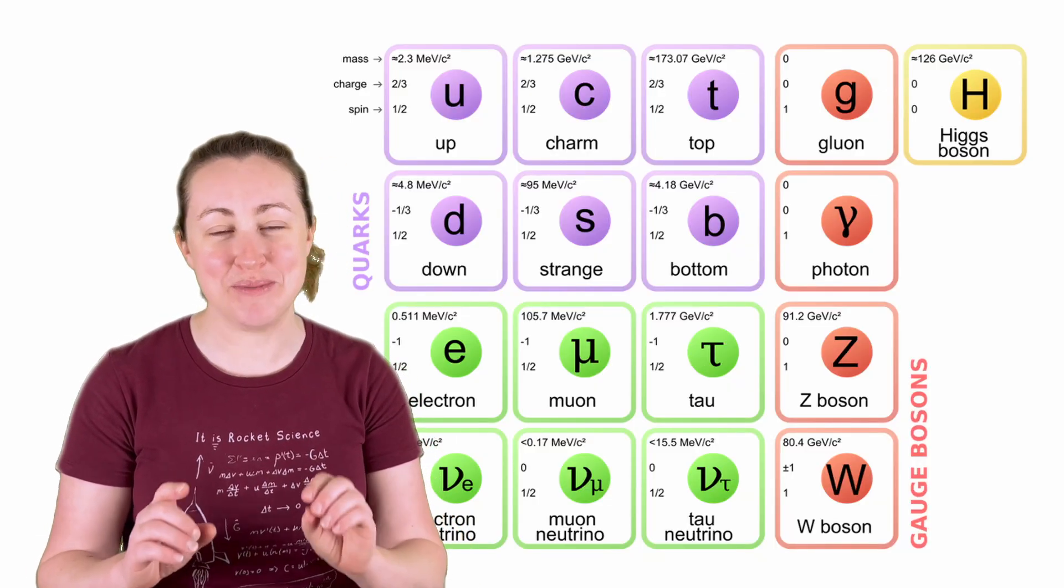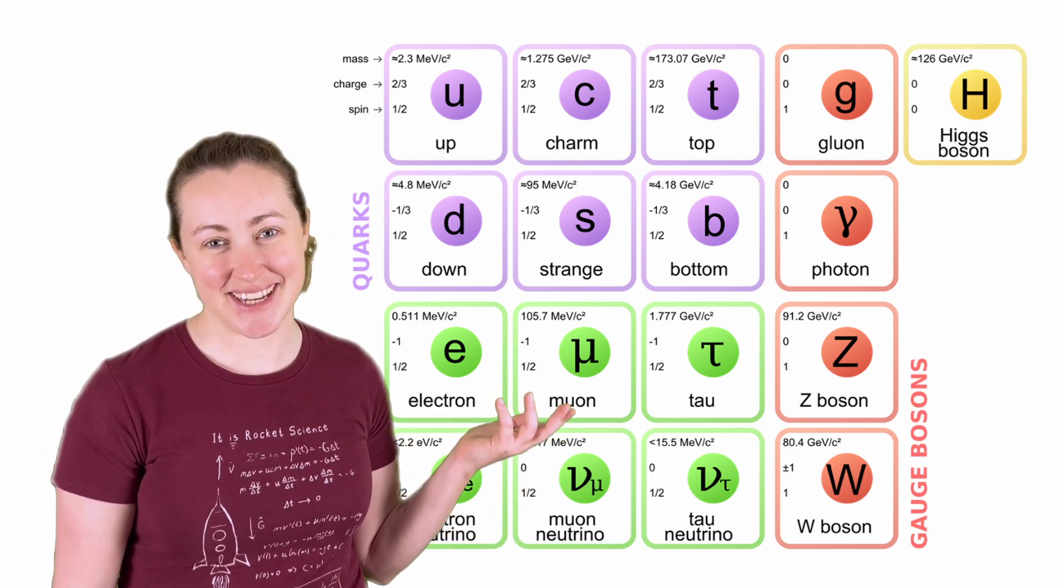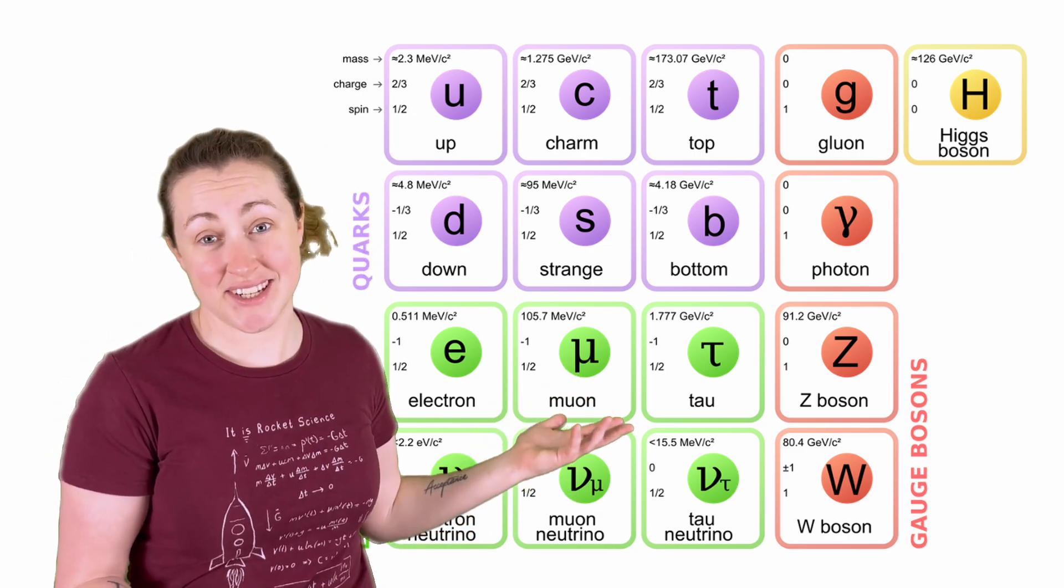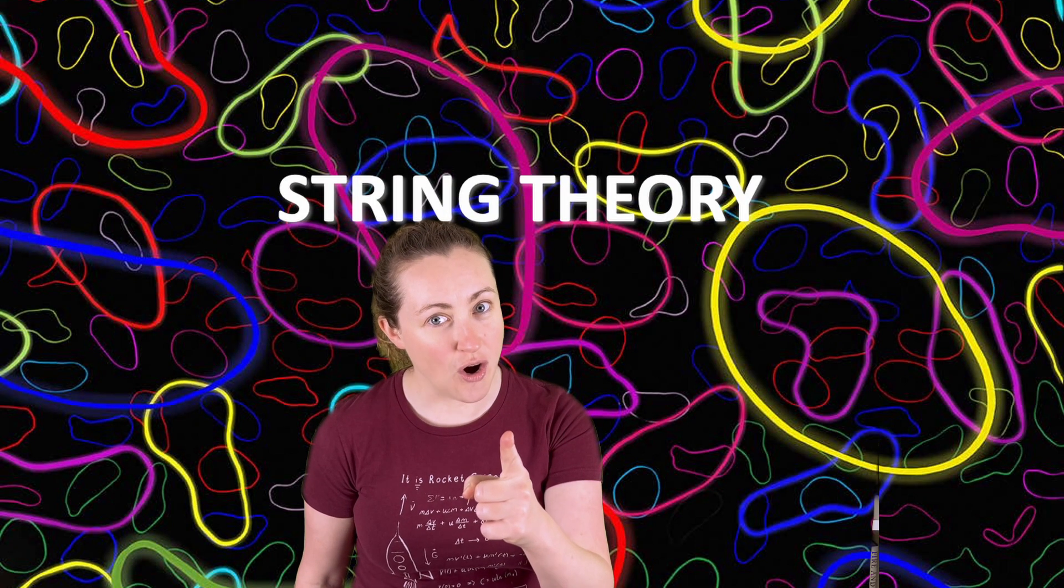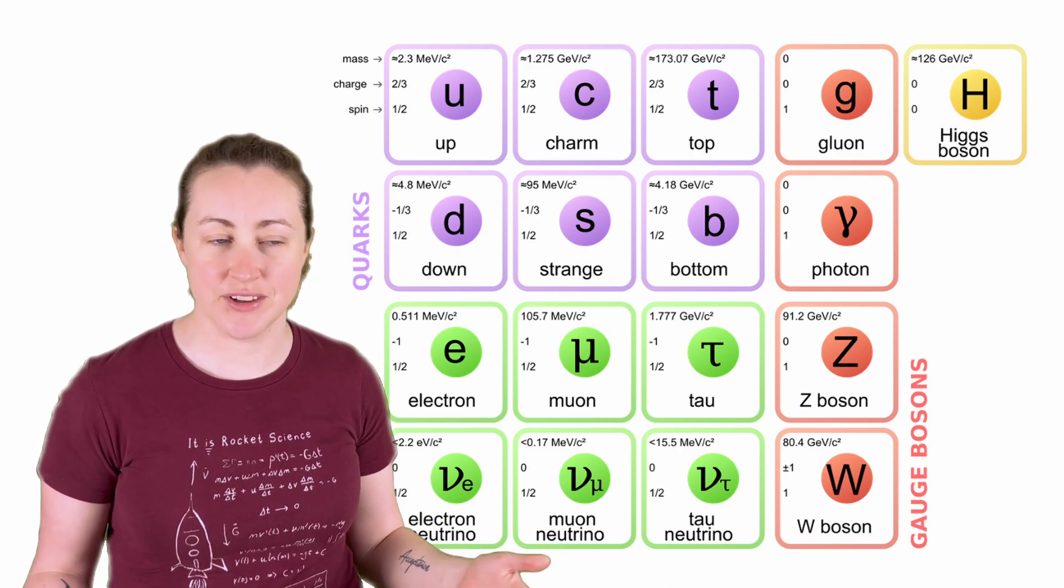When we say particles, by the way, we mean fundamental particles. You thought it stopped at atoms and neutrons, but it gets worse. These are the building blocks of our existence, and they are inside you right now. This is as small as it gets, as far as we know. Quantum computers can use different particles, but most companies stick with electrons and photons.